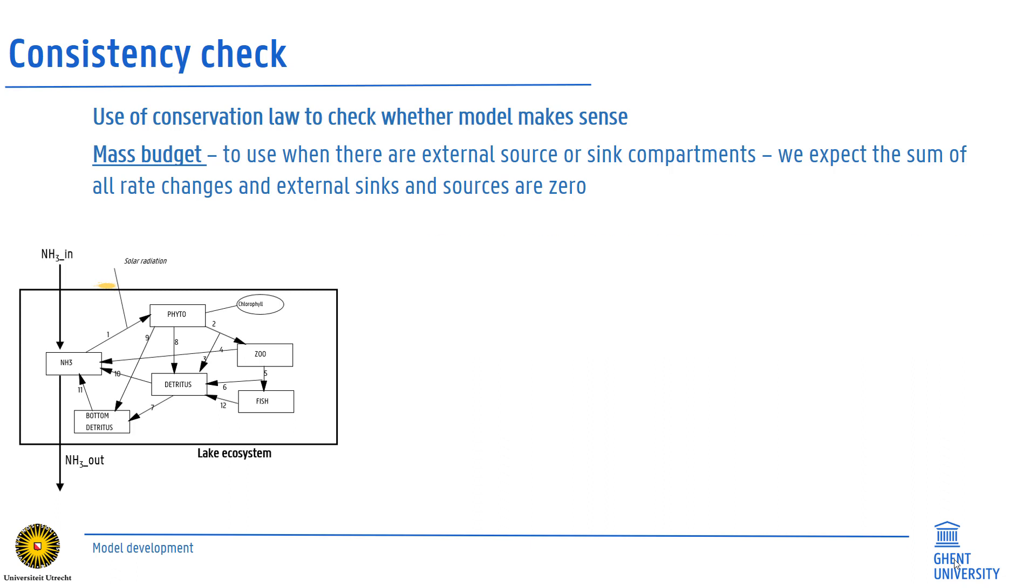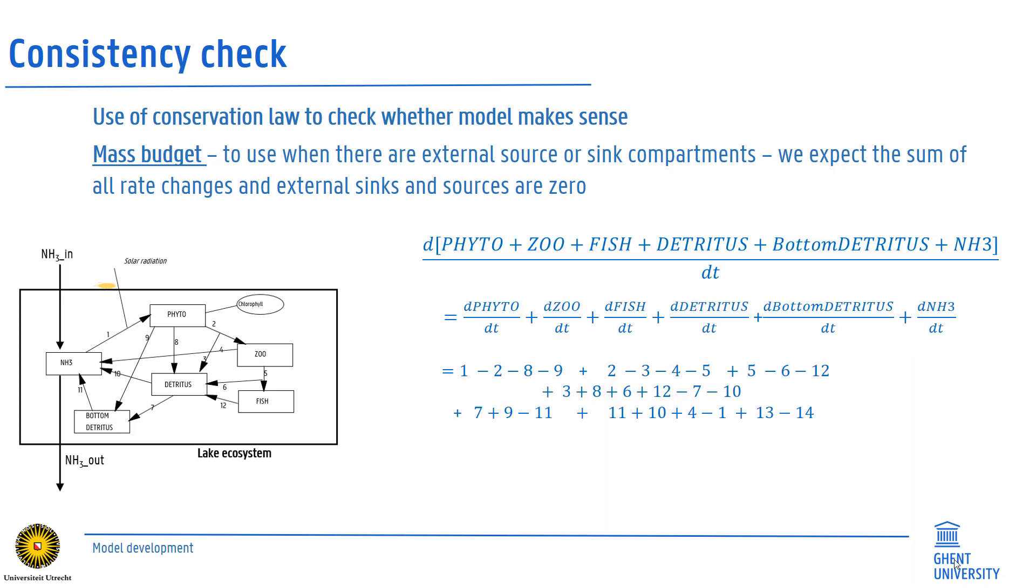So, back to our worked out ecosystem model, you will notice that the sum of all the mass balances eventually equalizes the external input and output flows. So, thirteen minus fourteen. This means that our model is consistent and ready to be further developed.